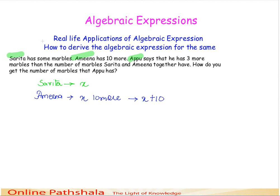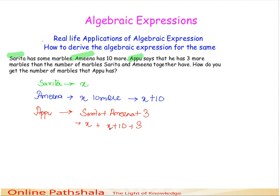Next, Appu says he has 3 more marbles than the number of marbles Sarita and Amina together have. So Appu has whatever Sarita has plus whatever Amina has, plus 3 more marbles. Let's substitute: Sarita has x and Amina has x plus 10, plus 3 additional marbles.